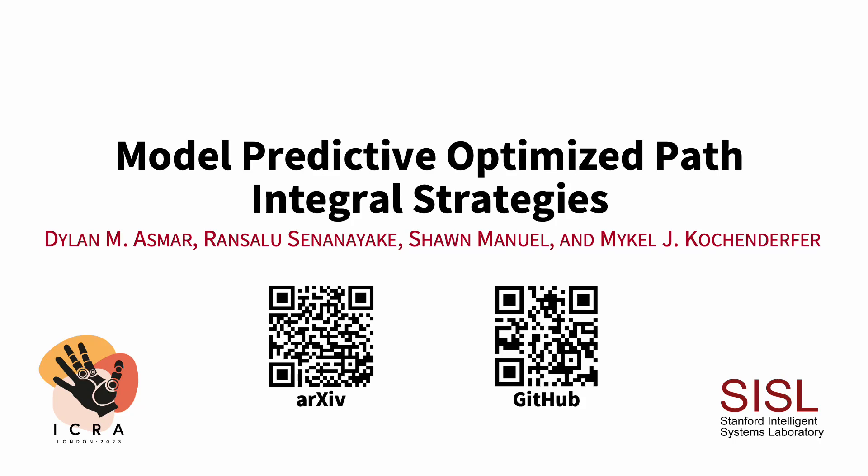In this work, we provide a reformulation of model predictive path integral control that allows for the implementation of adaptive importance sampling algorithms into the original importance sampling step of MPPI.